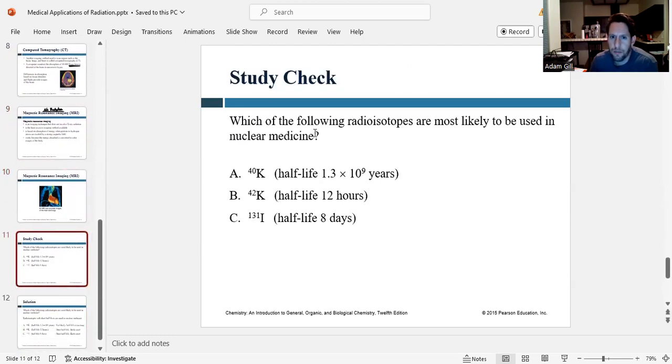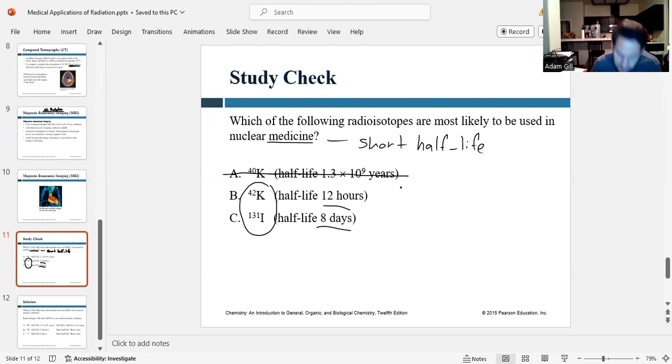So quick study check. Which of the following isotopes are most likely to be used in nuclear medicine? Potassium-40 with a half-life of 1.3 times 10 to the ninth years, potassium-42 with a half-life of 12 hours, or iodine-131 with a half-life of 8 days. Well, anything in medicine we want a short half-life for it to be useful. So we can see a half-life of 8 days and 12 hours are relatively short. And so I would say that these are likely to be used in nuclear medicine. And this one is not because it does not decay fast enough. It doesn't give off enough radiation to be useful.